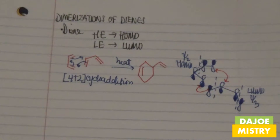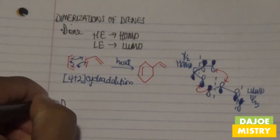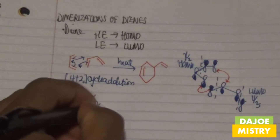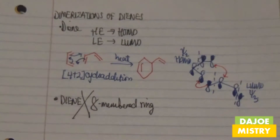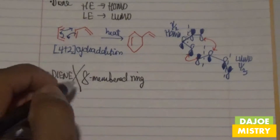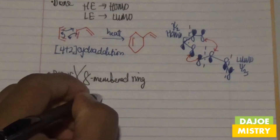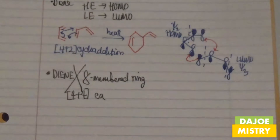We don't actually get the process where dienes try to form an eight-membered ring — that doesn't happen at all. Why don't we form an eight-membered ring in one step in the presence of heat? In the 4+2 cycloaddition process we don't get an eight-membered ring because an eight-membered ring results from a 4+4 cycloaddition reaction, and this is not thermally allowed.